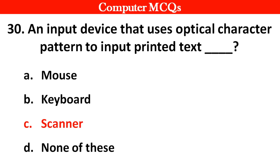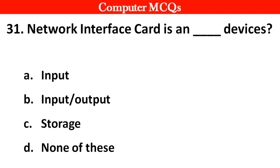Next question: Network interface card is a — device. Options: A. Input, B. Input/Output, C. Storage, D. None of these. Right answer is option B — Input/Output.